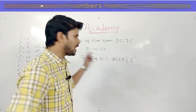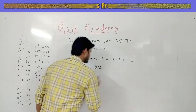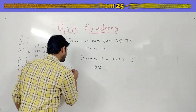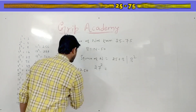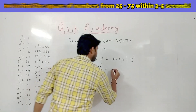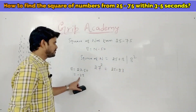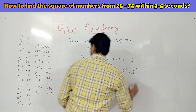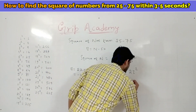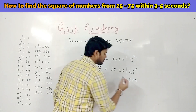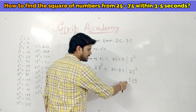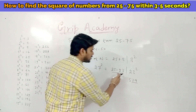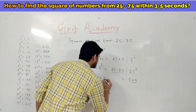Let's take an example. Consider we have to find the square of 27. First we find the base: 27 minus 50 is minus 23. So 27² equals 25 minus 23, slash 23 squared. 23 squared is 529, so we keep 29 here and 5 is carry. 25 minus 23 is 2, and 2 plus carry 5 is 7. So 27² is 729.